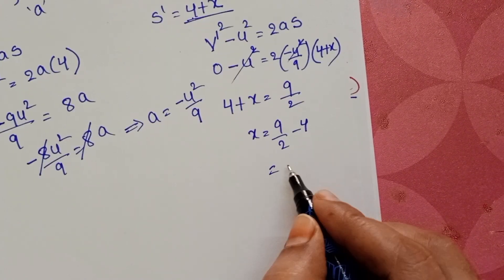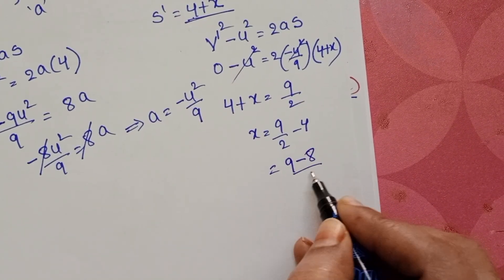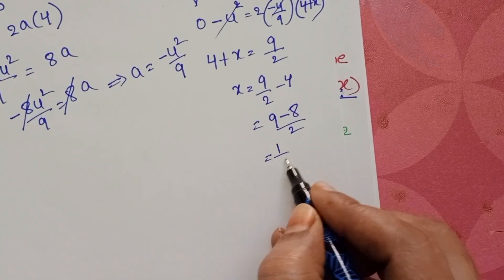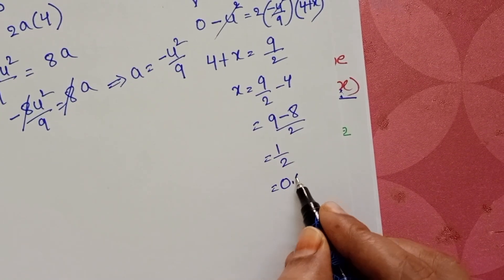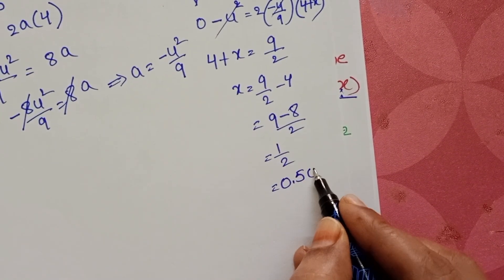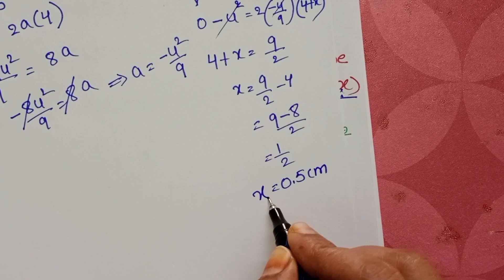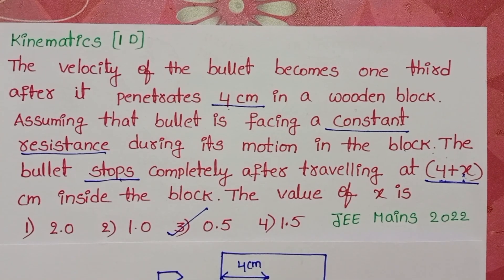Taking the LCM as 2: X = (9 - 8)/2 = 1/2, which equals 0.5 centimeters. The value of X is 0.5 centimeters. The third option is correct.